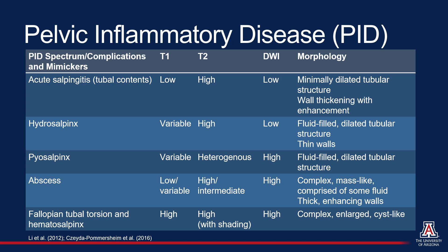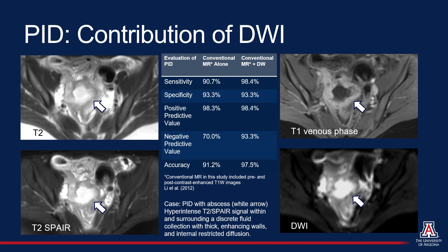DWI can be helpful in parsing out pelvic inflammatory disease, its complications, and its mimickers. PID can present with a wide range of acute and chronic complications, ranging from inflammation of the pelvic structures to pyosalpinx and abscess. Mimickers of PID include tubal torsion and hematosalpinx. Lee et al. found that DWI served to increase the sensitivity of detection and accuracy of diagnosis with an increase in negative predictive value when compared to conventional MR alone.